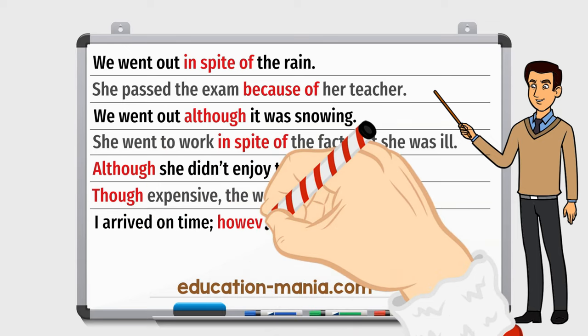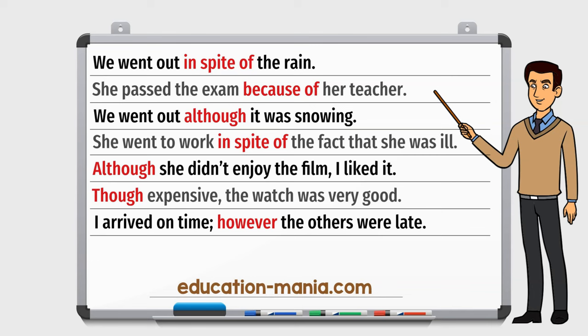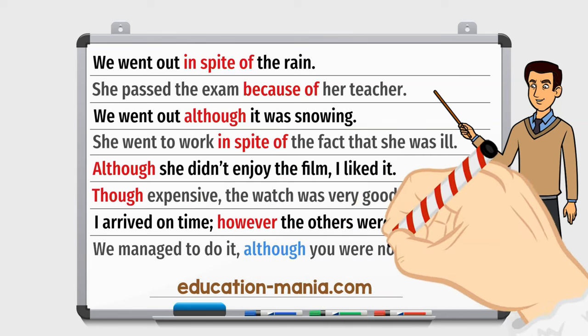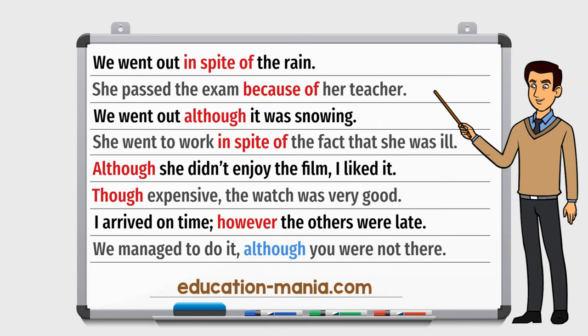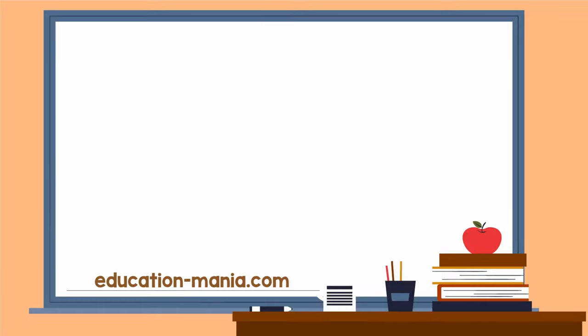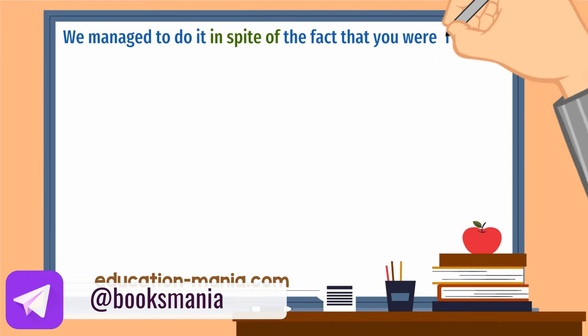I arrived on time, however the others were late. We managed to do it, although you were not there. We managed to do it, in spite of the fact that you were not there.